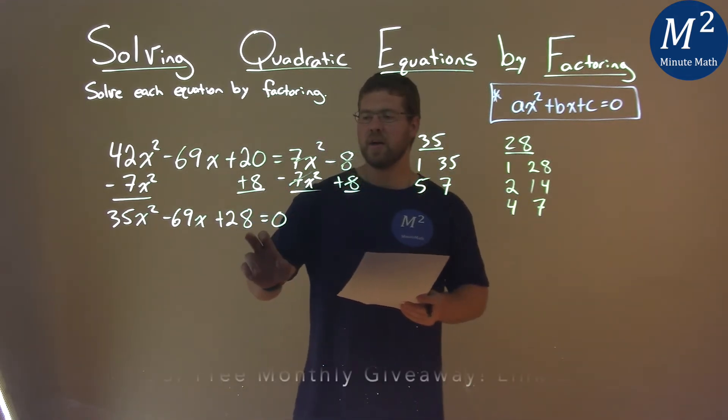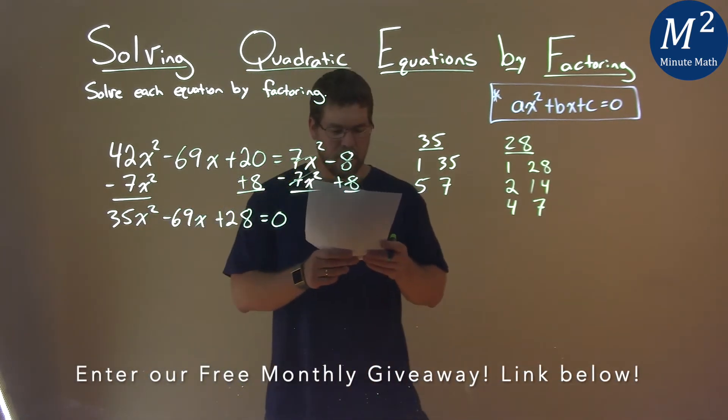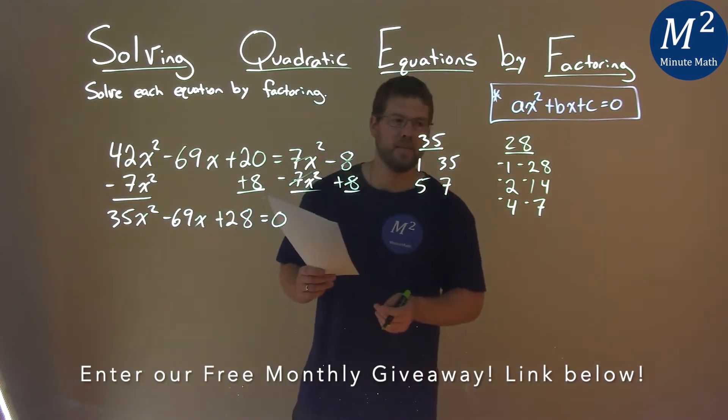Now, our c value is a positive number, but our b value is negative. That means both of these pairs in the c, both numbers in each pair has to be negative.